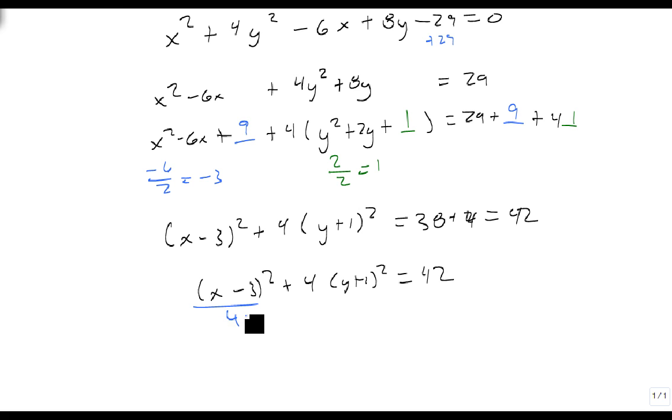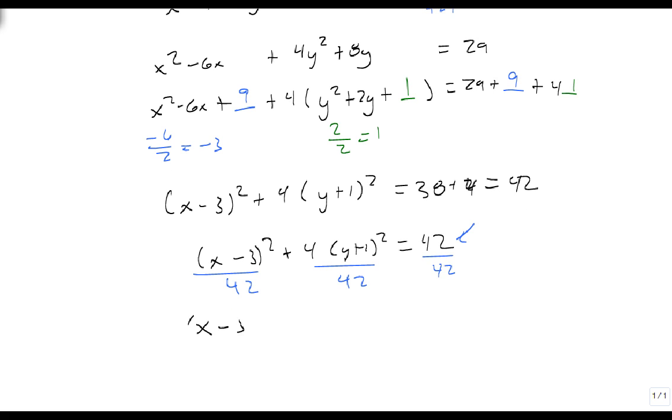Divide everything by 42 because remember we need this to be a 1, and that gives me x minus 3 squared over 42 plus y plus 1 squared over 21 equals 1. And we have converted from general form to standard form.